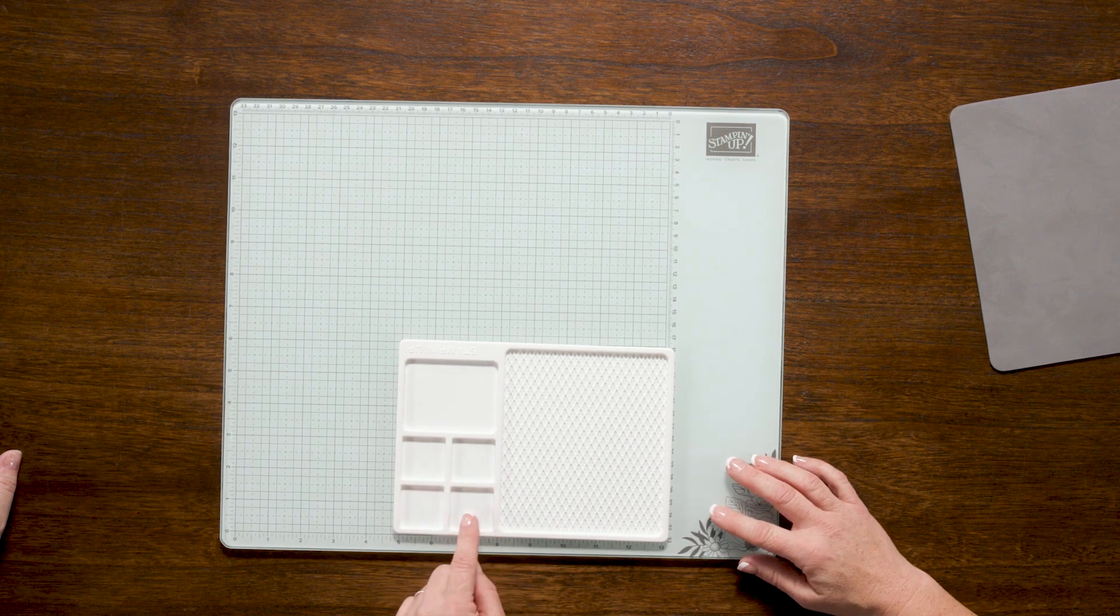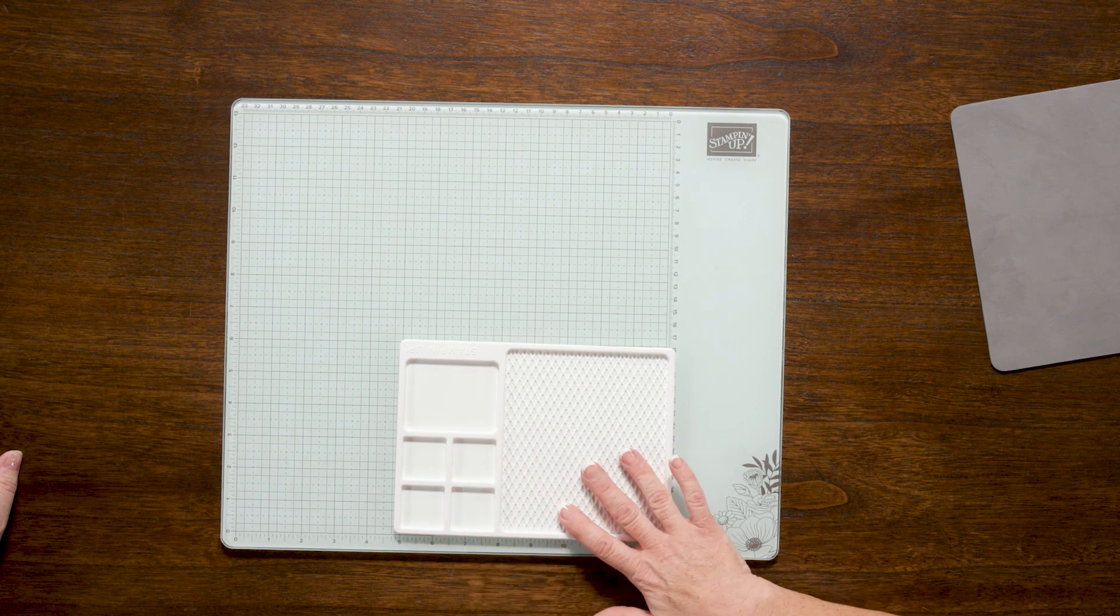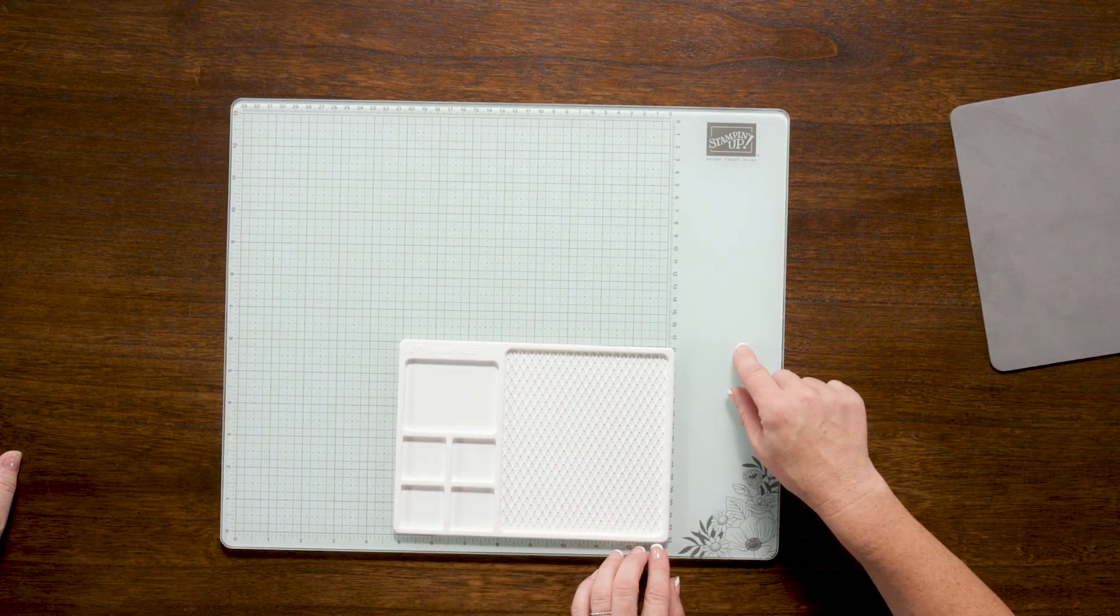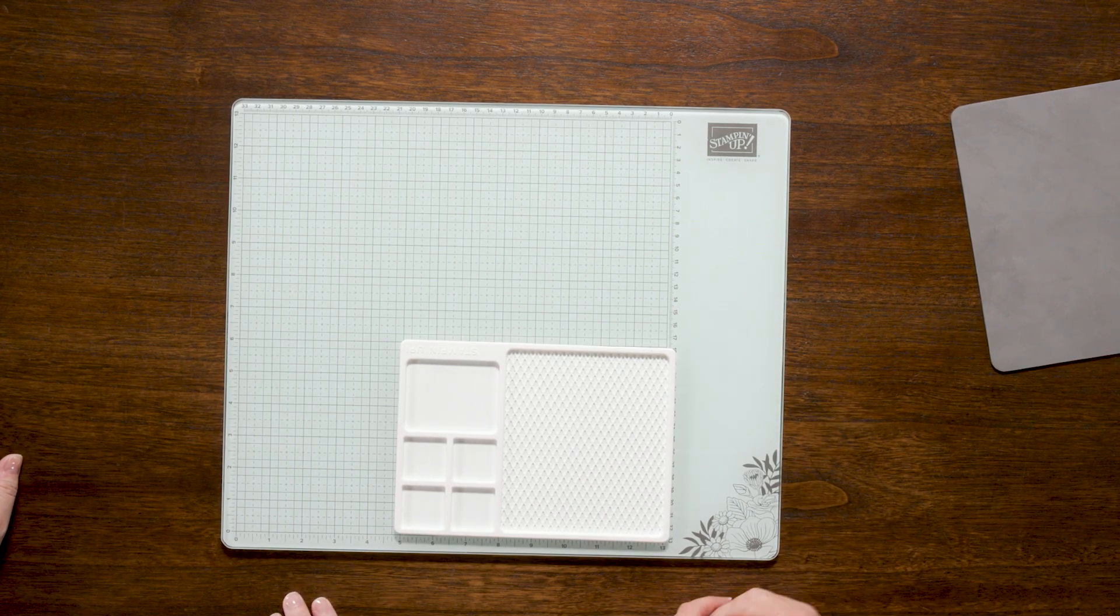And also you can see the fun palette indentions it has in here. You can use these for mixing, drop some re-inkers in there, mix it up. But if you don't want to stain this beautiful white surface, you can do your mixing right here on the side. So this will stain over time.